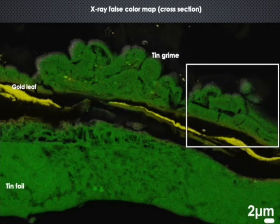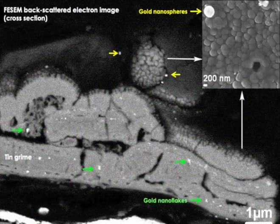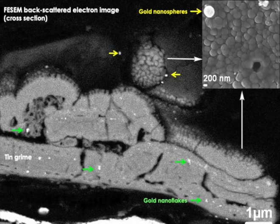The porous grime shows cauliflower morphology and is made of nanocrystals of abhurite and hydroromarchite, which are stannous hydroxychloride minerals. Tin-based globular nanoparticles cover the grime, which embeds gold nanoflakes and spherical gold nanoparticles.